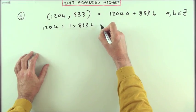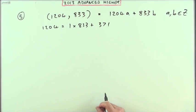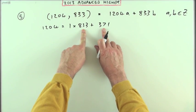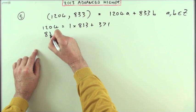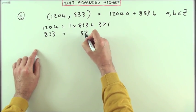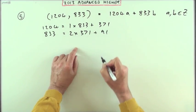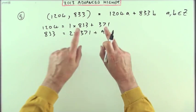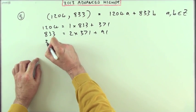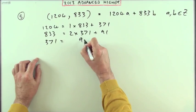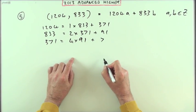Then we start again with these two numbers, which hold the greatest common divisor. So 833 — how many 371s can that be? That's two of them, and that leaves 91. Now these two hold the key to the greatest common divisor, so we start again: 371 will be a certain number of 91s — that will be four of them, plus 7 left over.